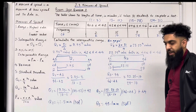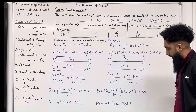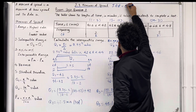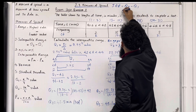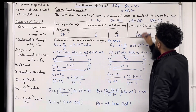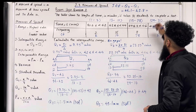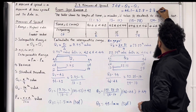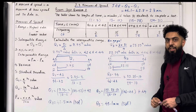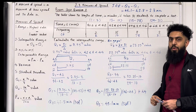I've got Q1 and Q3, so I can now calculate the interquartile range. The IQR is given by Q3 minus Q1. So we have 45.1 minus 42.8, which gives 2.3 minutes. So that is the interquartile range, and this completes exam style question two.